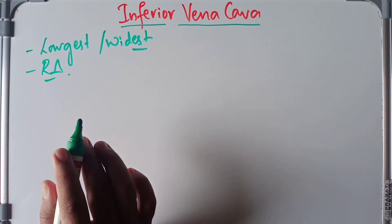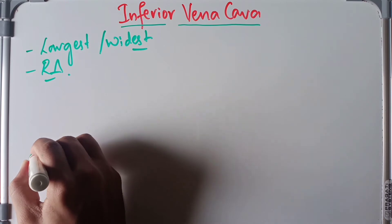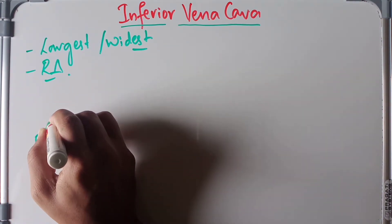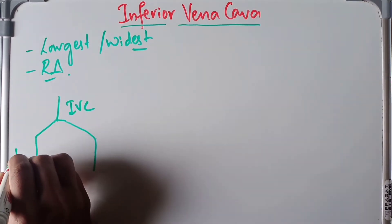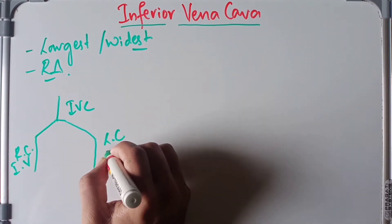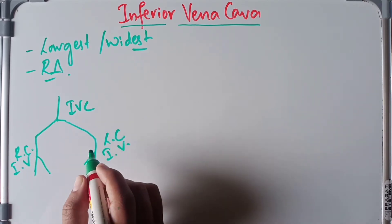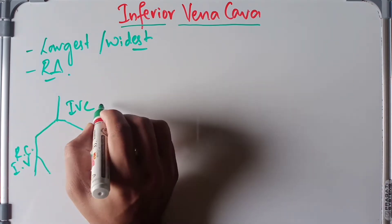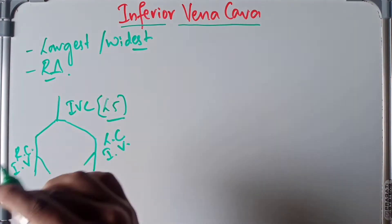The inferior vena cava is formed by the union of the right and the left common iliac veins. The right common iliac vein and the left common iliac vein join to become the inferior vena cava. Each includes the external iliac veins and internal iliac veins on both sides. This union occurs at the level of the L5 vertebra.